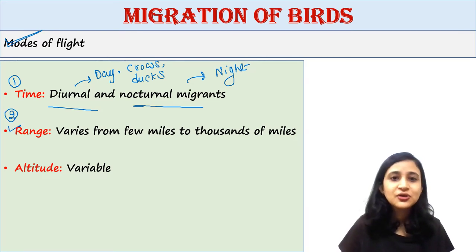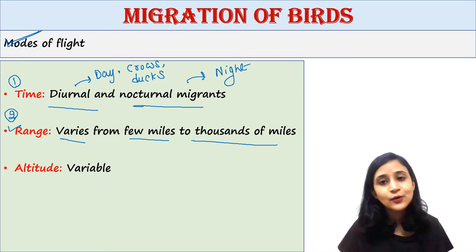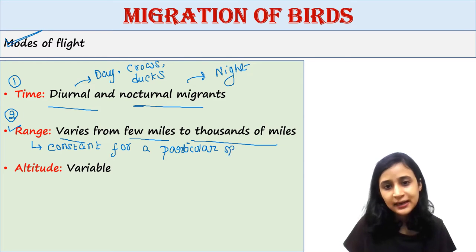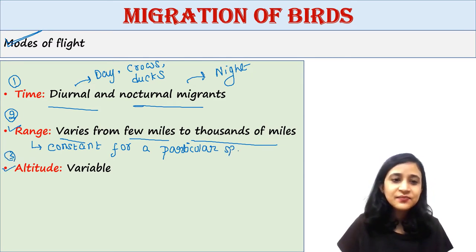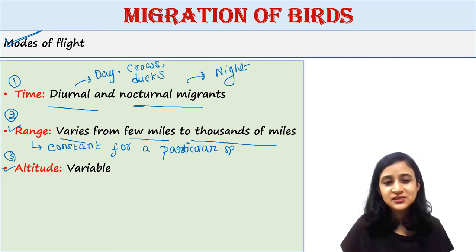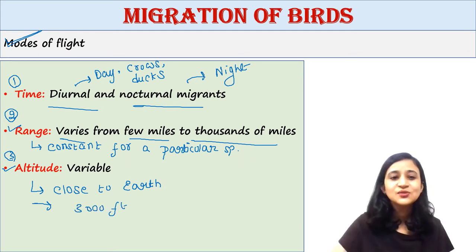Next is range of migration. The range of migration varies from a few miles to thousands of miles in different species of migratory birds, but the range is constant for a particular species. Regarding altitude, some birds fly close to the earth while some fly at an altitude of 3000 feet. This is variable.